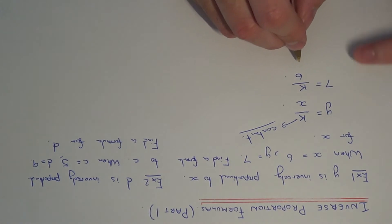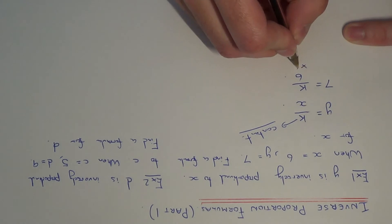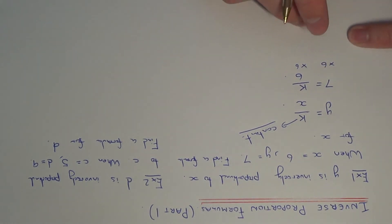So if we're going to figure out what k is, we need to get rid of the divided by 6, and we can do this by multiplying both sides of our equation by 6. So 7 times 6 is 42, so we get k is equal to 42.